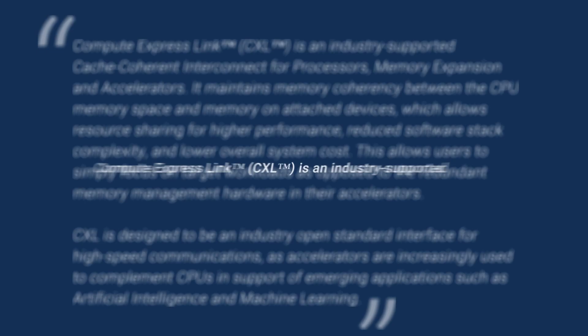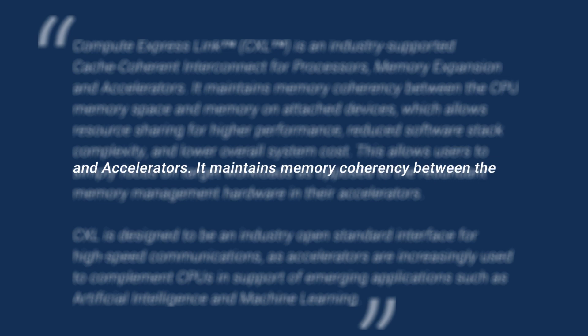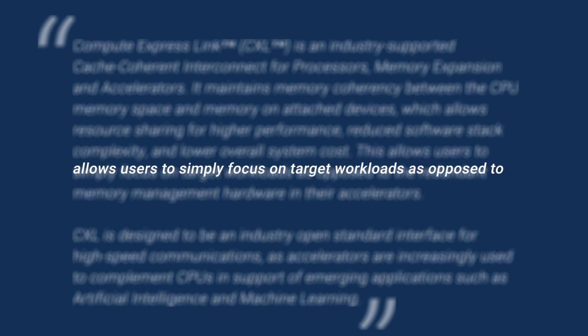Because Compute ExpressLink is used to describe both a broad concept and a documented standard, we'll turn to the CXL Consortium for their official definition. Compute ExpressLink, CXL, is an industry-supported, cache-coherent interconnect for processors, memory expansion, and accelerators. It maintains memory coherency between the CPU memory space and memory on attached devices, which allows resource sharing for higher performance, reduced software stack complexity, and lower overall system cost. This allows users to simply focus on target workloads as opposed to the redundant memory management hardware in their accelerators.